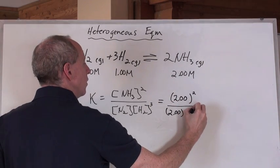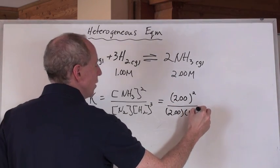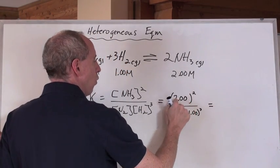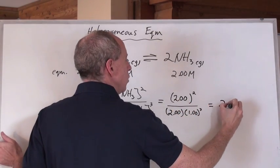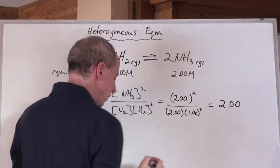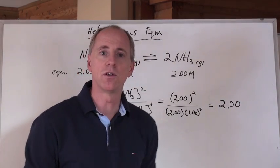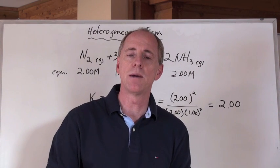Well, 1 cubed, of course, is going to be 1, and that's going to be 4 divided by 2, which is going to be 2. But look at it, I'm keeping all of my significant digits. So, in the end, my K value equals 2.00 for a very rudimentary type of question.